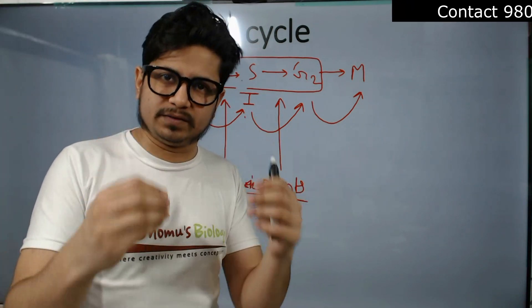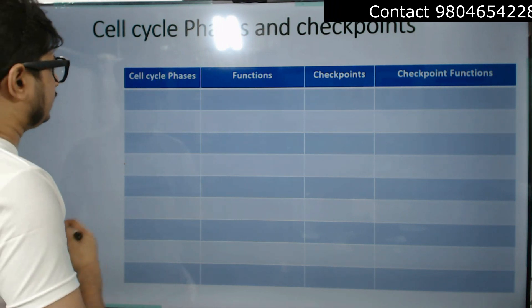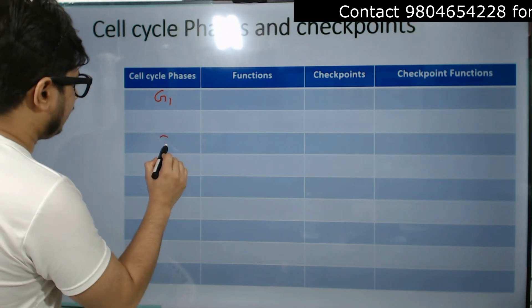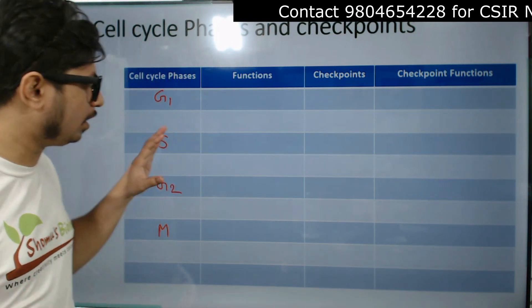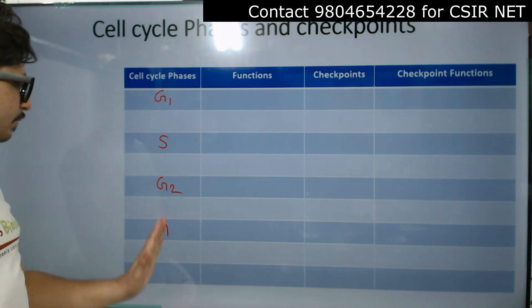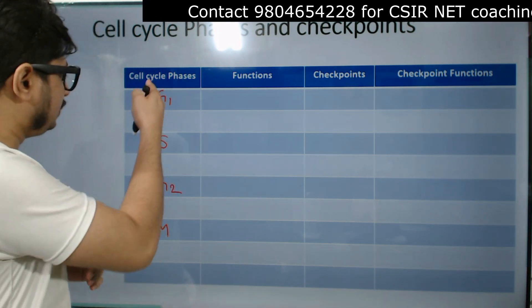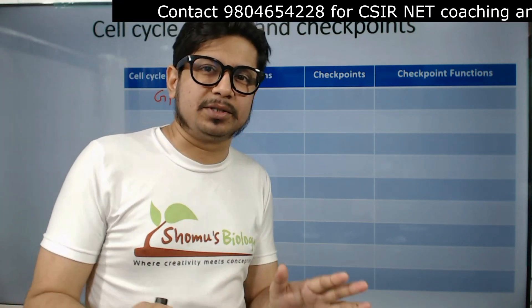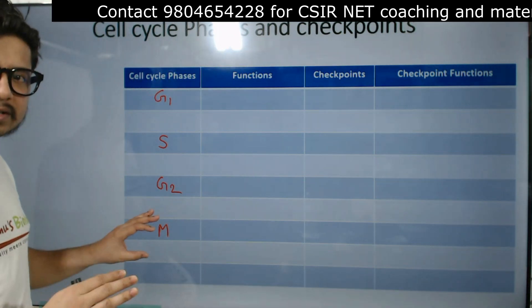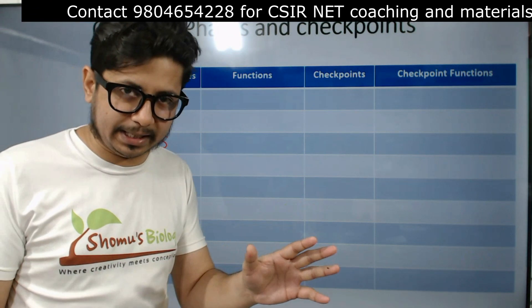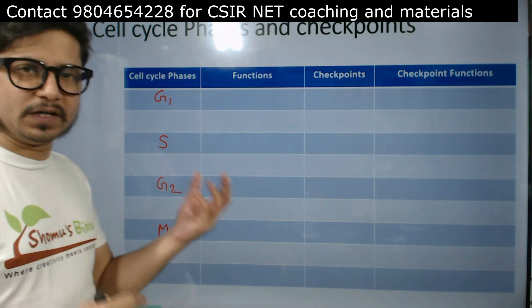Let's move to the next slide. I'll write down the different phases: G1 phase, S phase, G2 phase, and M phase — I'll leave one row blank for a reason you'll see shortly. We know the cell actually takes more time to complete interphase — that is G1, S, and G2 — than the actual process of mitosis, which involves segregation of sister chromatids and cytokinesis.